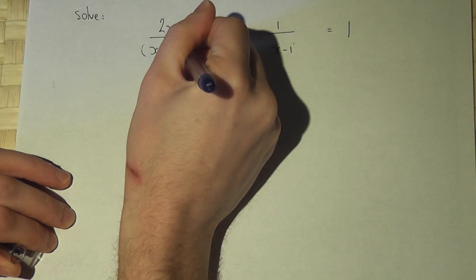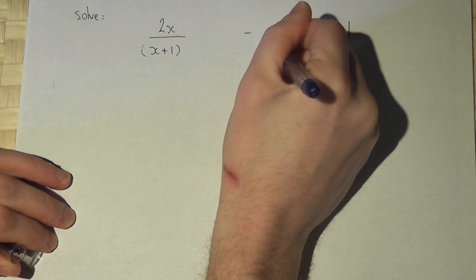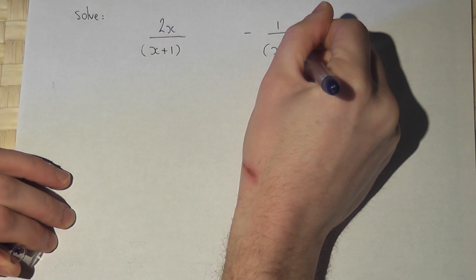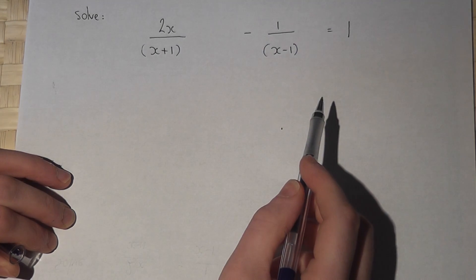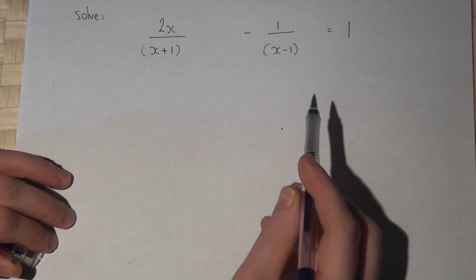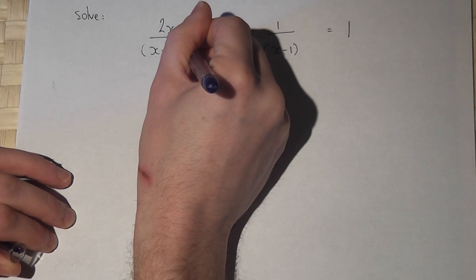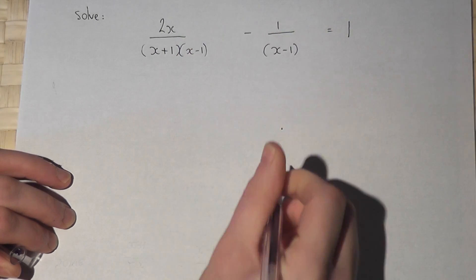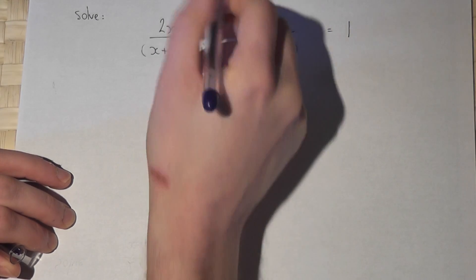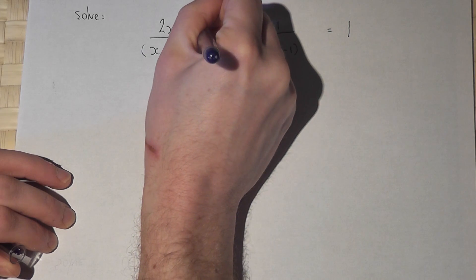I begin by placing brackets like so. I now want these two fractions to have the same denominator. So I put an x minus 1 down here, but what I do to the bottom of the fraction I must do to the top.